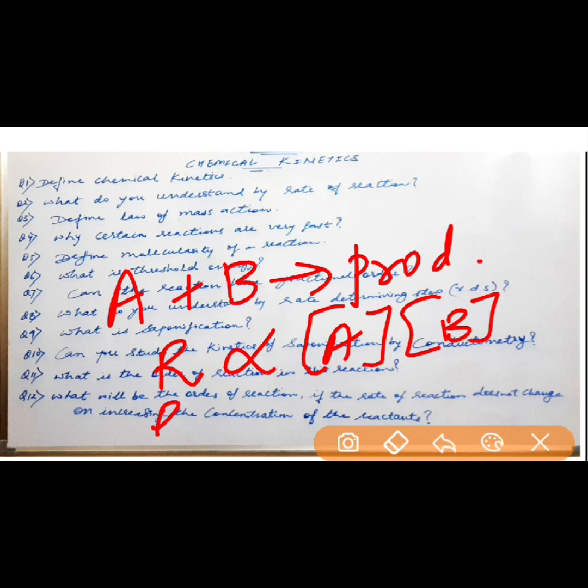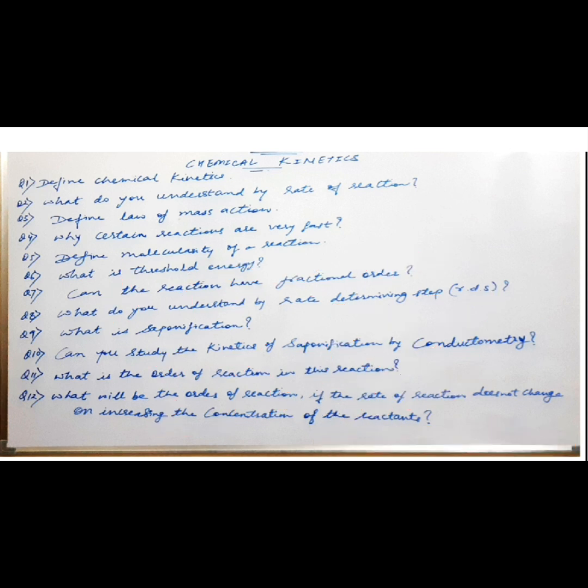Further, this proportionality sign could be removed by adding this proportionality constant K. And this proportionality constant K is termed as the velocity constant in this particular case. Then check out the next one.